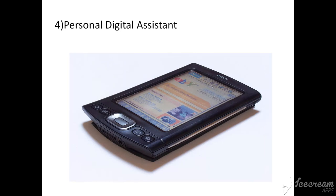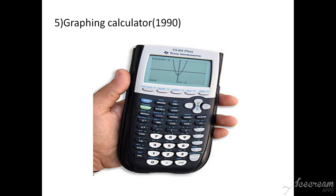The next type is the Personal Digital Assistant (PDA), introduced in 1993. It is a term for a small, mobile handheld device that provides computing, information storage, and retrieval capabilities for personal or business use, often for keeping schedules, calendars, and so on. The next is graphing calculators, introduced in 1990 — a calculator device that has the ability to display plotted graphs for complex equations such as parabolas.